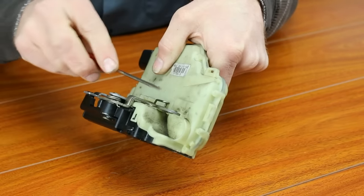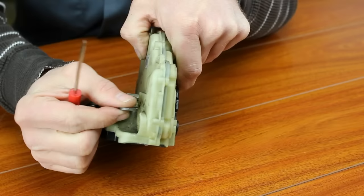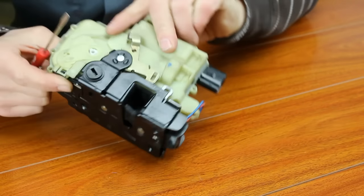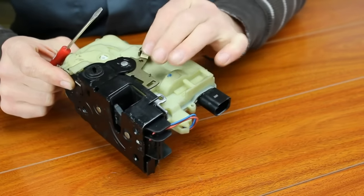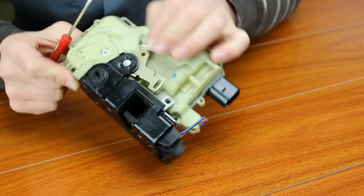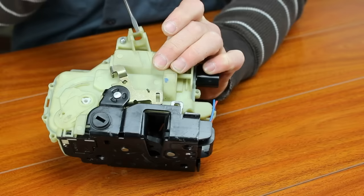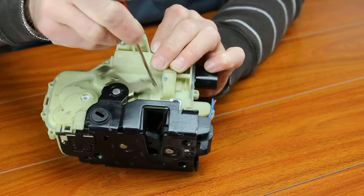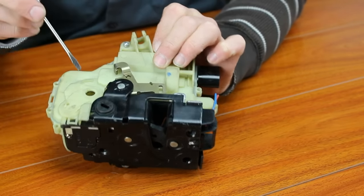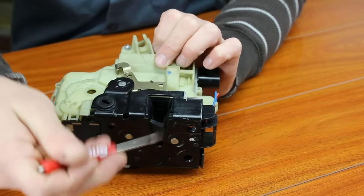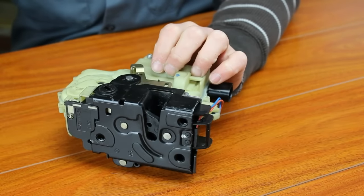This portion right here is the piece that actually latches closed on the door. And then you would have a cable attached here. This would be your outer open, and then this would be your inner open. This one's actually broken so it won't open from the inside. But there's a cable attached here. When you pull the inner door handle like this, it pulls this.